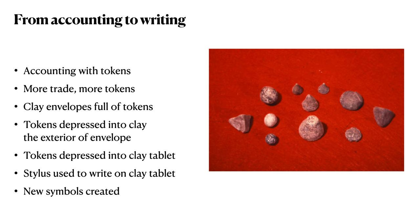For thousands of years in Mesopotamia, tokens were used for accounting purposes, keeping track of such items as units of grain, sheep, and other commodities. As cities developed and more trade ensued, more types of tokens were created. Eventually, clay envelopes were developed as containers to hold tokens.